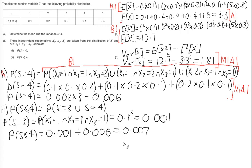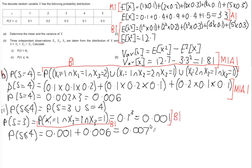For the marks here: a statement mark for showing P(s=3) can only happen one way by getting 1 on each of the x variables, a mark for getting P(s=3) = 0.001, and a final mark for P(s ≤ 4) = 0.007.